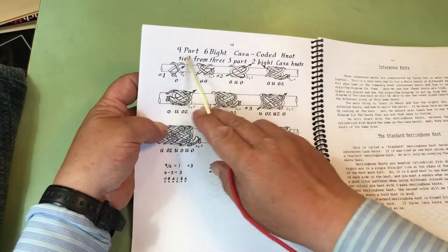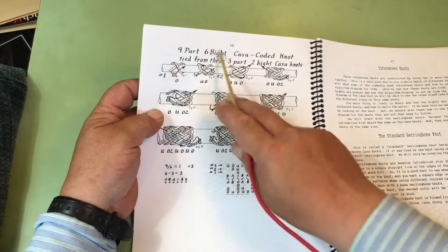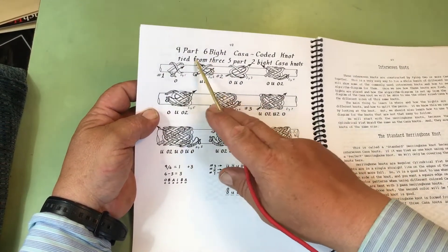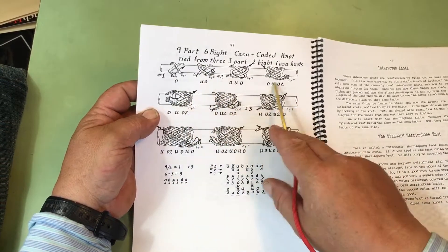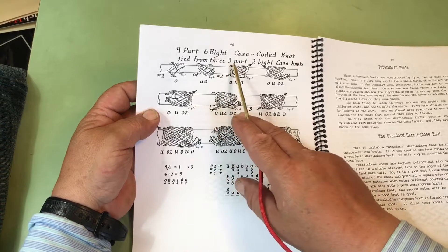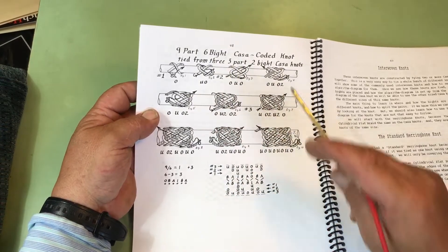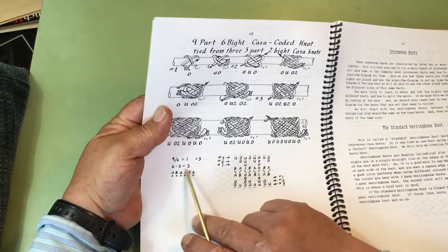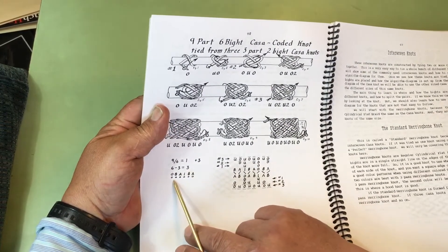This knot, nine-part, six-bight, it's got a common divisor of three. So, it takes three strands to tie this. And so, we're tying this knot from three, three-part, two-bight Casa knots. And the same thing here, we have our count value of three, and we count over one,